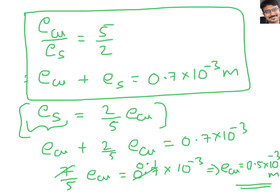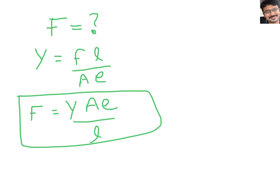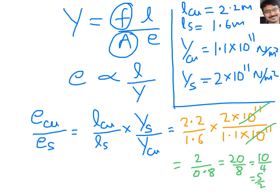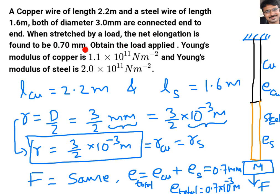Either copper or steel can be selected to calculate force — the answer will be the same. Here I eliminated steel and used copper values. If you eliminate copper instead, take E_steel and use its length and Young's modulus — you will get the same answer of 176.8 N. This is a series combination problem where net elongation is given and force is asked. I hope it is clear. Thank you very much.